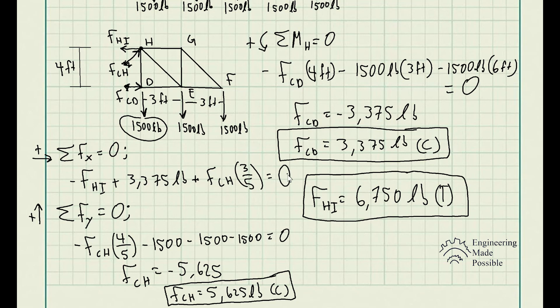The method of sections is used to analyze trusses efficiently. Instead of working through every joint as in the method of joints, you decide where to cut the truss, draw the free body diagram of either side, and apply the static equilibrium equations equal to zero. This is how to solve for the internal forces of specific members of a truss.